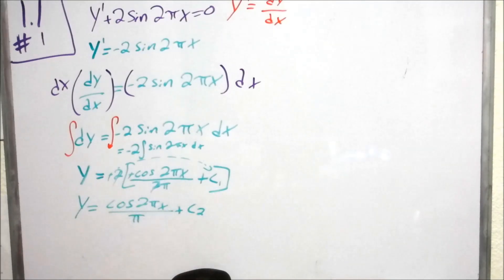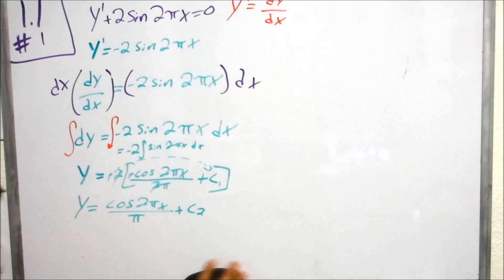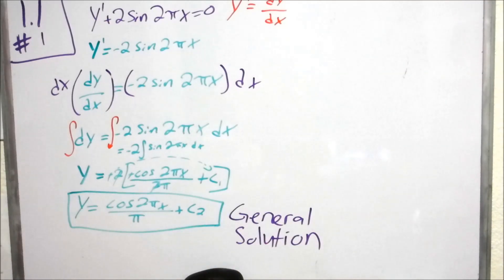So since, I can tag that on here too. If there's any confusion, c2 is nothing more than negative 2 multiplied by c1. And negative 2 times a constant is just another constant. And just like that, that is your general solution.